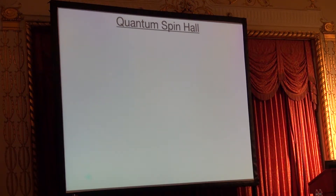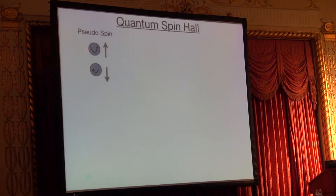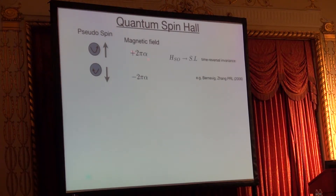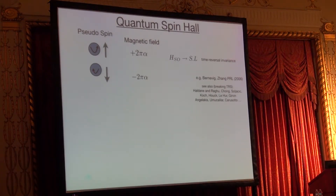So now we have not broken time-reversal symmetry, yet we have something that acts like a magnetic field. The reason is that these modes are degenerate — we have counterclockwise modes and clockwise modes in these resonators — so we can think of them as pseudo-spin up and down. The effective magnetic field is positive for up and negative for down, very similar to spin-orbit interaction. Here it is exactly the same.